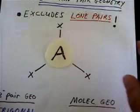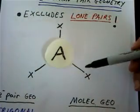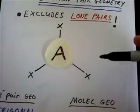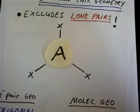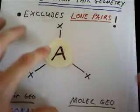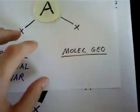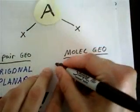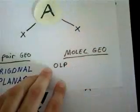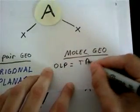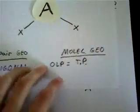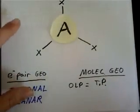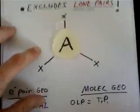Now if there are no lone pairs, in other words if every one of these pairs of electrons is used for bonding and not a lone pair, then the molecular geometry is still going to be trigonal planar. So zero lone pairs: trigonal planar, same thing as the electron pair geometry. With no lone pairs, the electron pair geometry and the molecular geometry will be the same.